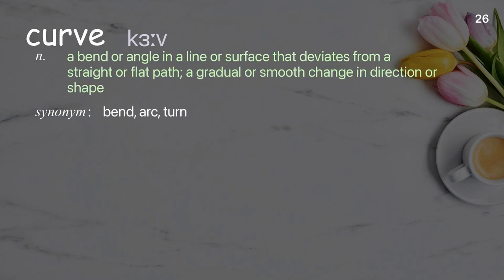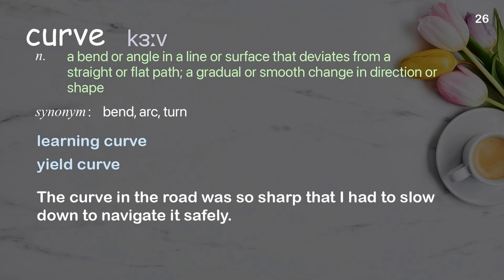Curve: a bend or angle in a line or surface that deviates from a straight or flat path; a gradual or smooth change in direction or shape. Examples: learning curve, yield curve. The curve in the road was so sharp that I had to slow down to navigate it safely.